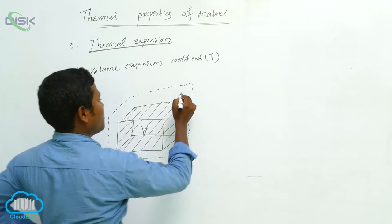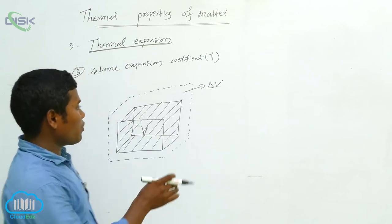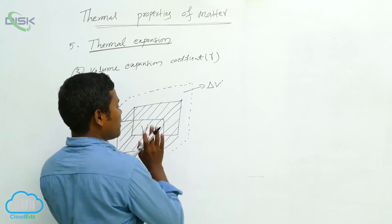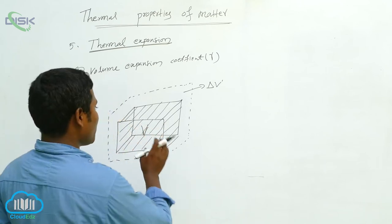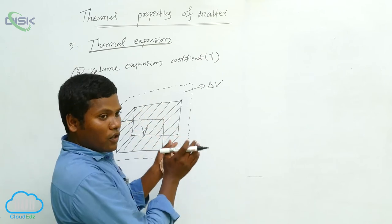If you consider this is the volume, then what happens? This is the delta V. So if you give small temperature, if you want to supply any temperature, the body will be at the same. So if you give small temperature, then what happens? Automatically the volume is automatically increasing.